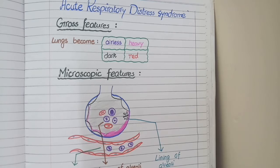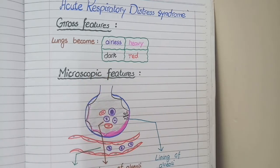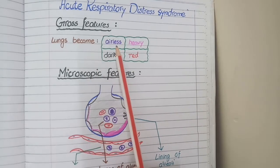Now let's study the gross features in acute respiratory distress syndrome. In acute respiratory distress syndrome, as the air is lost and being replaced by edema and hemorrhages.